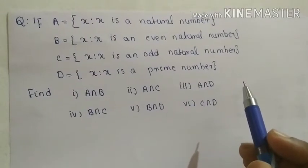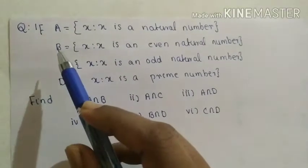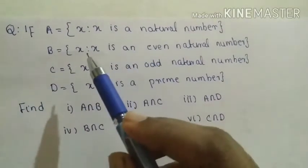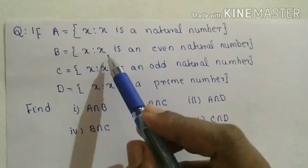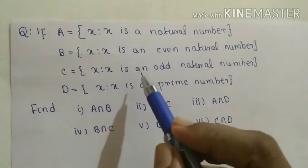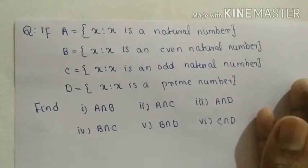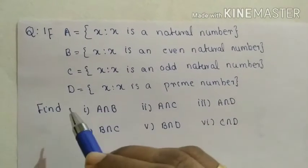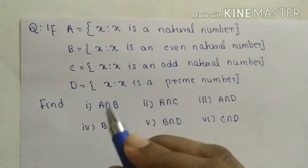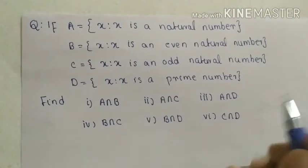Let's solve some questions regarding intersection. Given that A is the set of all x such that x is a natural number, B is the set of all x such that x is an even natural number, C is the set of all x such that x is an odd natural number, and D is the set of all x such that x is a prime number. We need to find A∩B, A∩C, A∩D, B∩C, B∩D, and C∩D.